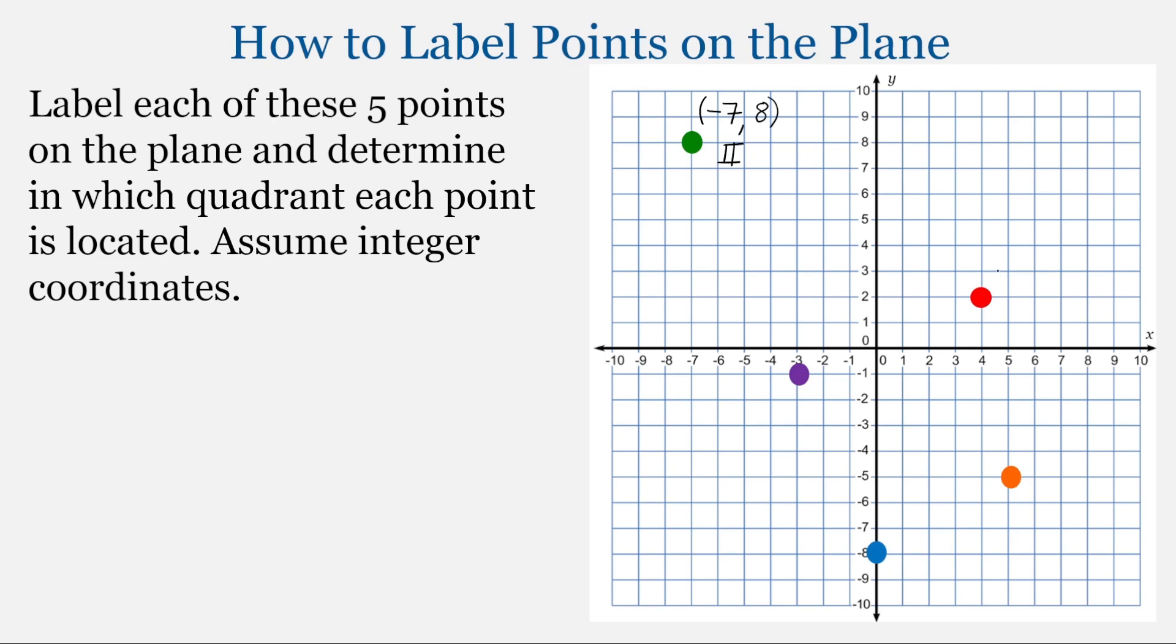For our red point, we'll look for the x-coordinate first. We're going to drop down to the x-axis. That's the number 4. And then moving to the y-axis, that's the number 2. And this is the first quadrant.